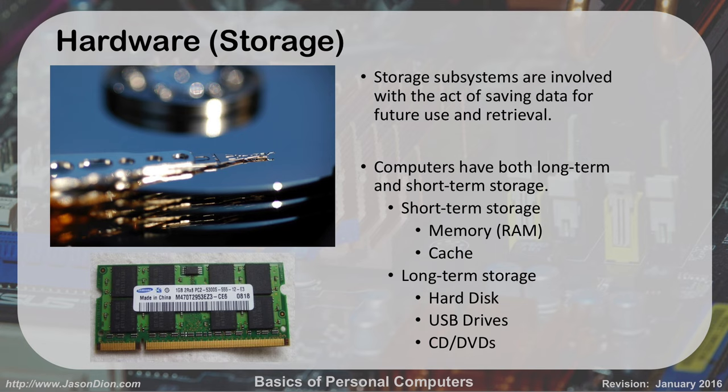Storage. The fourth major function — along with input, processing, and output — is storage. Storage is everything we do to keep track of and save data for future retrieval and use. That can be in our RAM, which is random access memory — short-term. The cache, which is memory inside our processor. Or long-term storage with things like our hard disk, flash drives, USB drives, and optical disks like CDs and DVDs.